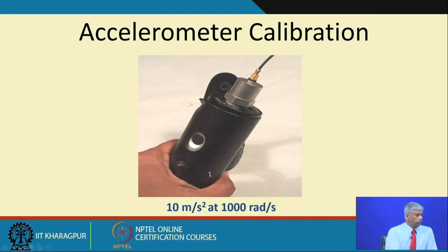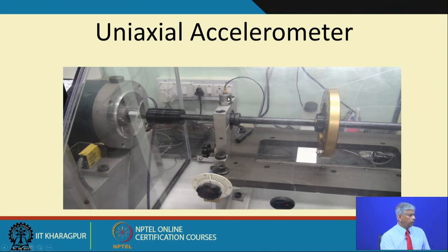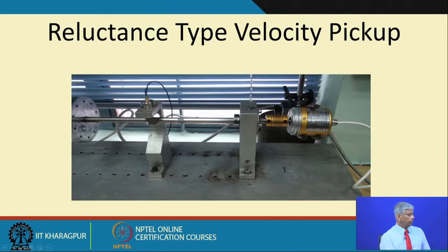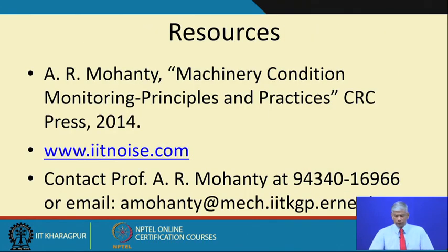This is the calibrator, which gives an acceleration of 10 meters per second squared at 1000 radians per second. This is a typical view of an accelerometer being used to measure vibration on a bearing rig. There is also an industrial heavy-duty accelerometer with a strong magnet along with a vibration meter. Laser vibrometers for both normal and rotational vibration measurements will be discussed in subsequent classes.